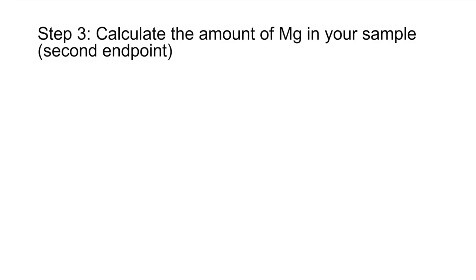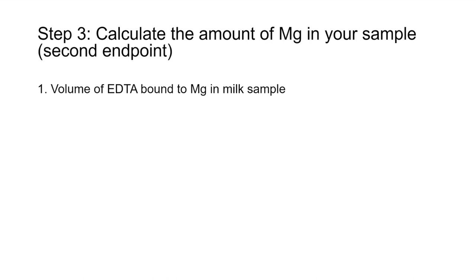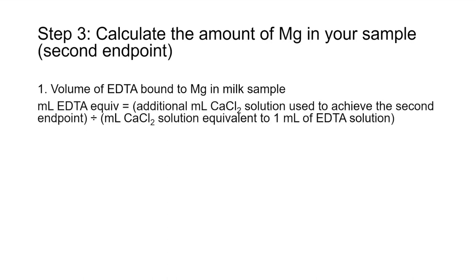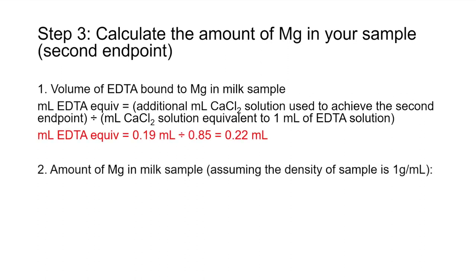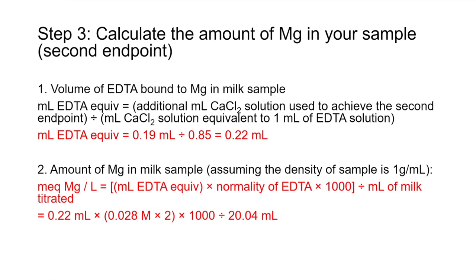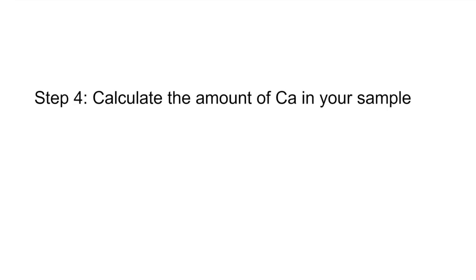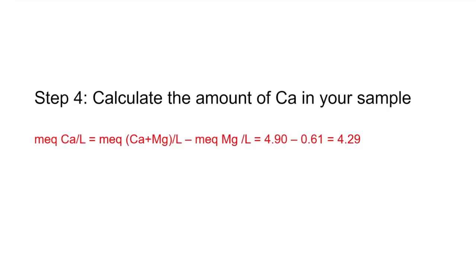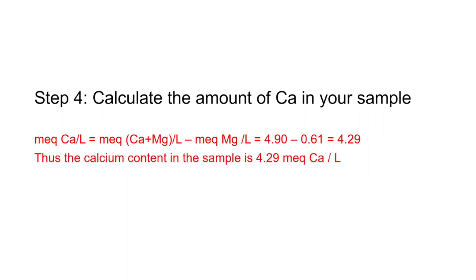Like in the last step, you need to calculate how much EDTA is bound to magnesium. This is calculated using the additional amount of calcium chloride added in this step, divided by the equivalent value of calcium chloride to 1 milliliter of EDTA. Then use this equation to calculate the amount of magnesium — the unit is also milliequivalents per liter. To calculate the amount of calcium in the sample, simply subtract the amount of magnesium from the total content of calcium and magnesium in your sample.